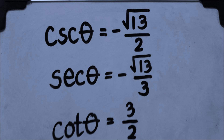Next, cosecant theta equals negative square root of 13 over 2. Secant theta equals negative square root of 13 over 3. And last, cotangent theta equals 3 over 2.